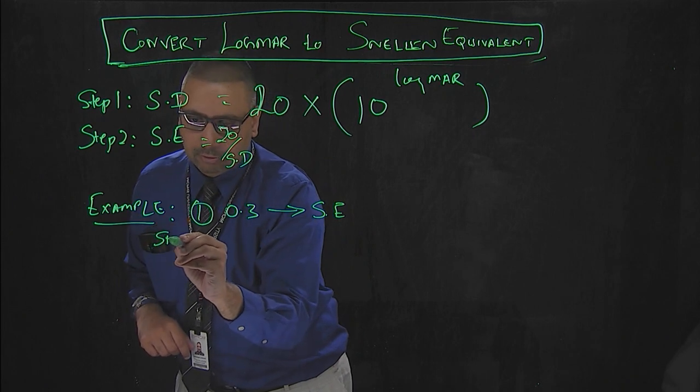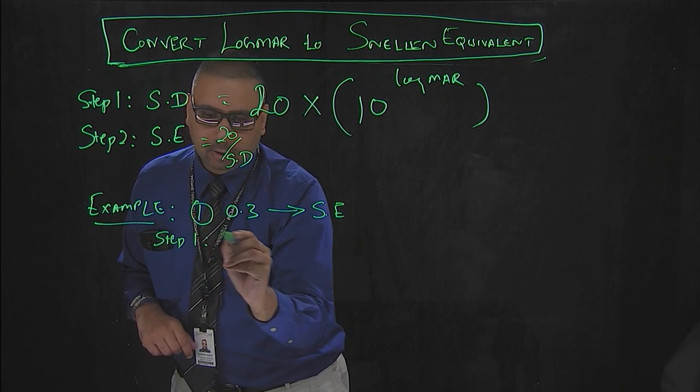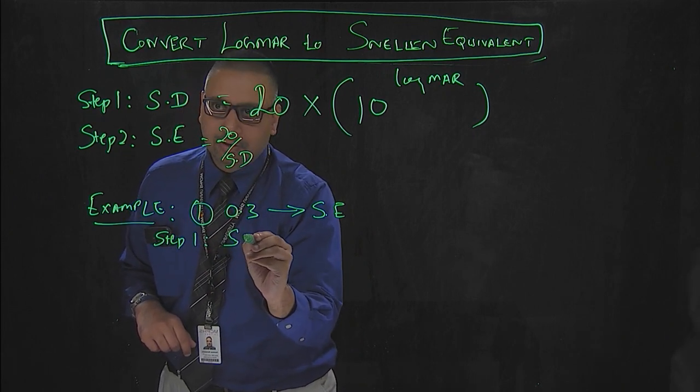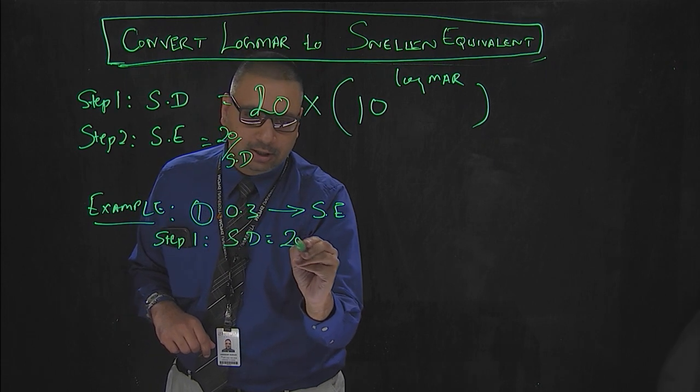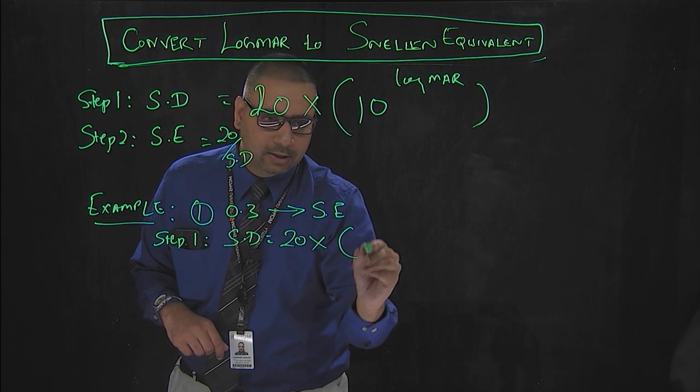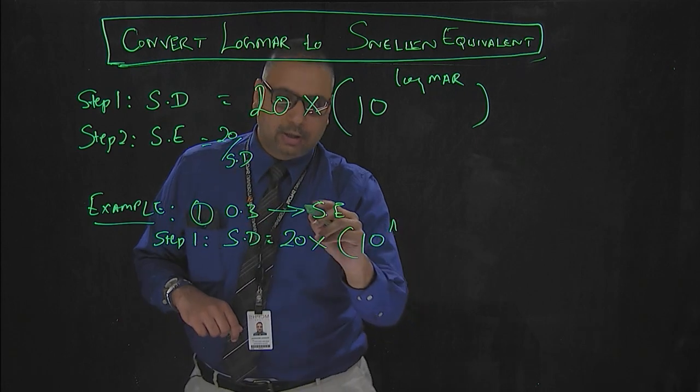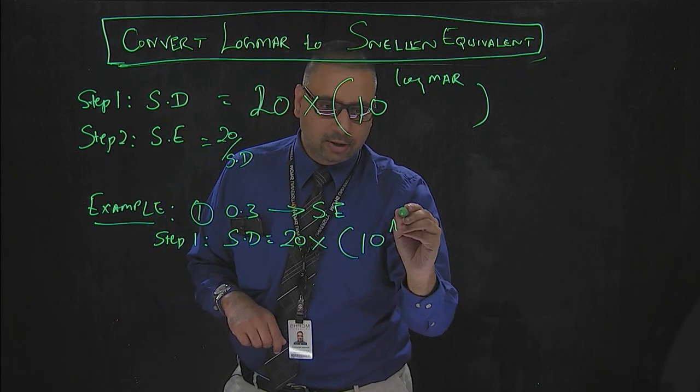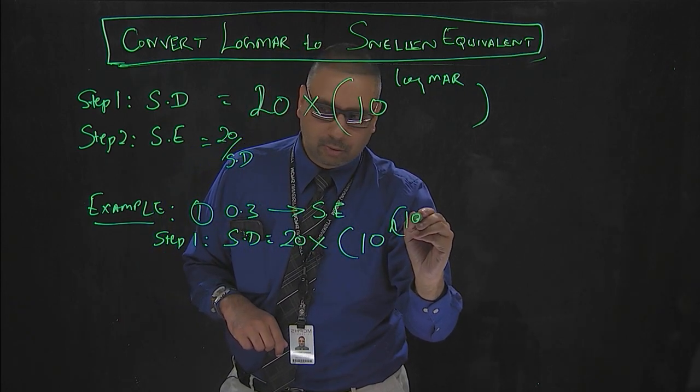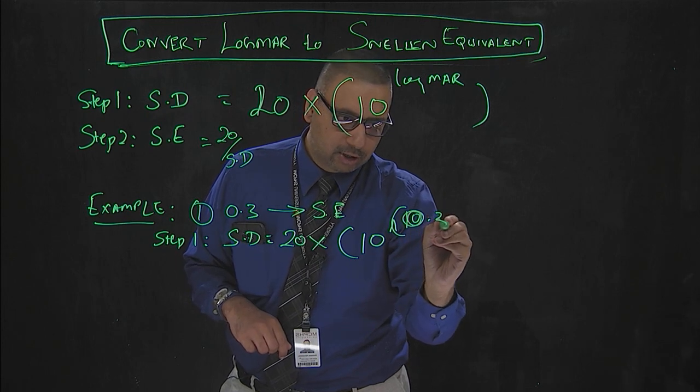Step one, you calculate Snellen denominator which is 20 multiplied by 10 to the power 0.3. The log MAR value here is 0.3.